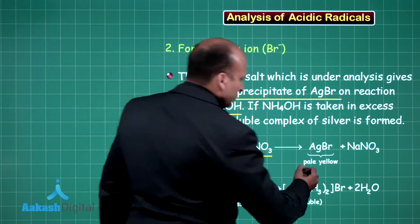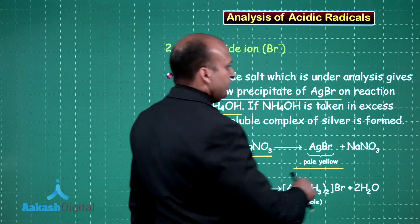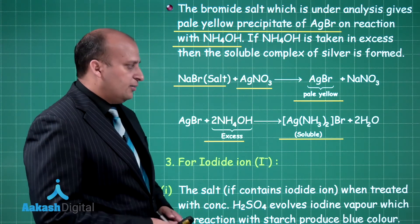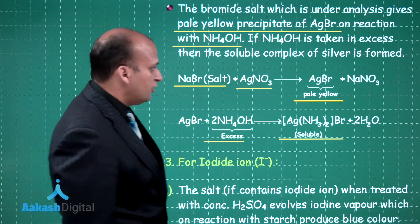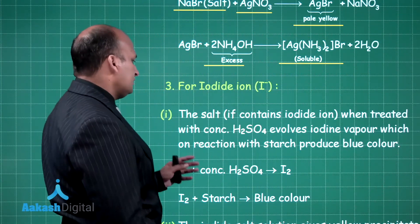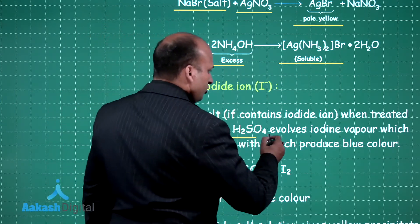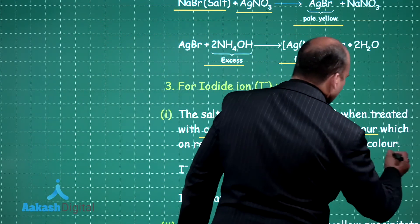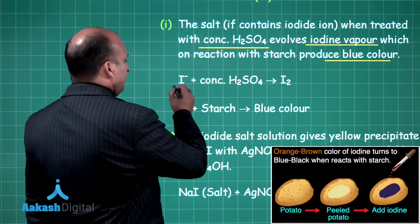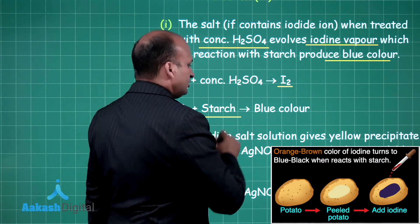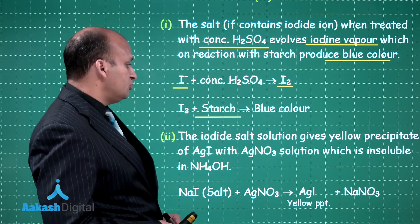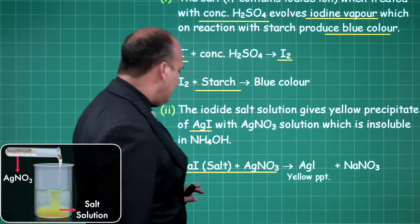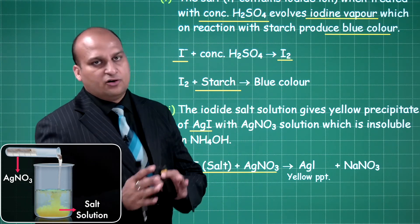For bromide: the bromide salt gives a pale yellow precipitate of AgBr on reaction with AgNO3. Adding ammonium hydroxide in excess forms a soluble diammonium silver bromide complex. For iodide: the salt treated with concentrated H2SO4 evolves iodine vapors, which react with starch to produce a blue color — confirming iodide. Alternatively, reaction with AgNO3 gives a yellow precipitate of AgI.